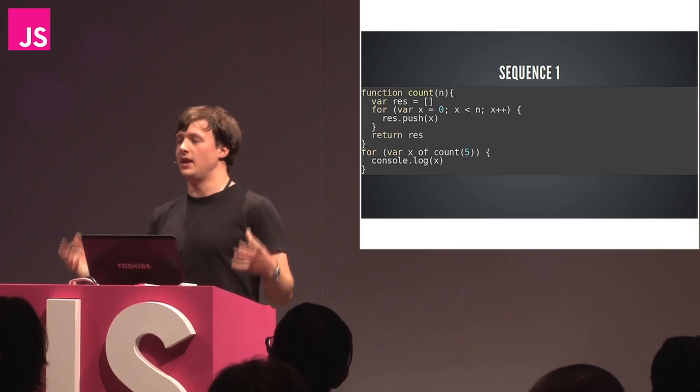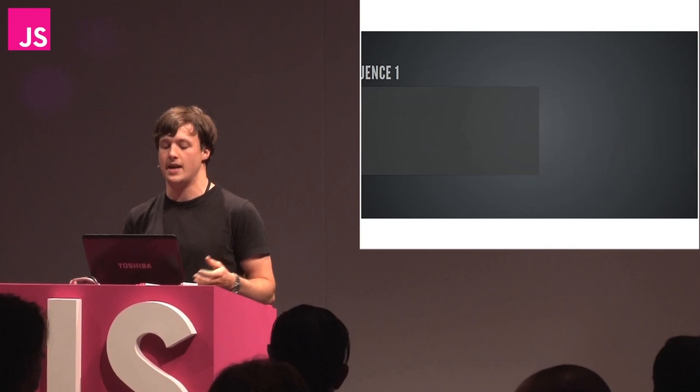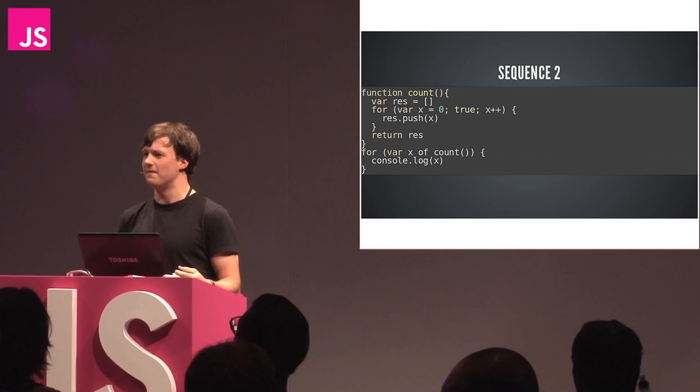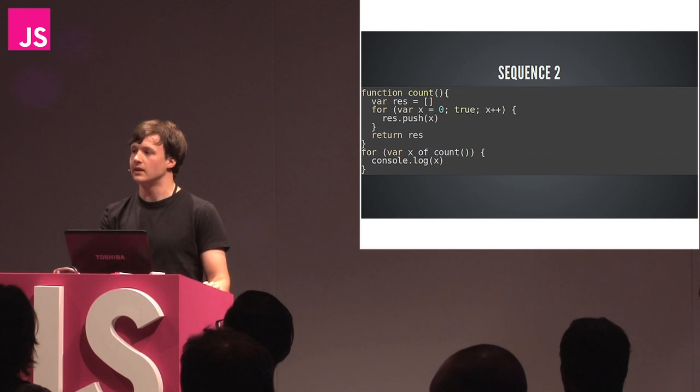But the integers aren't really a finite sequence - they're an infinite sequence. We can't have this function return an infinite sequence as an array. If we try and do that, just replace the condition with true, this is trying to create an infinitely long array. So this count function is just never going to return. We're never going to get into that for loop, and we're never going to log any output.